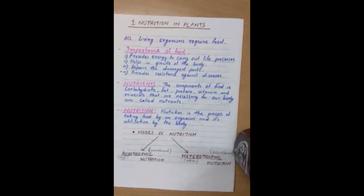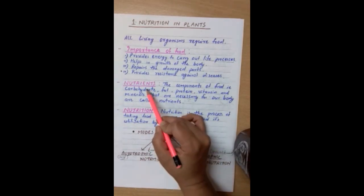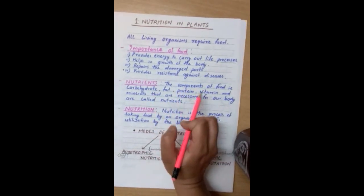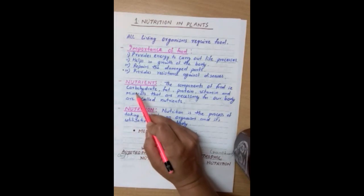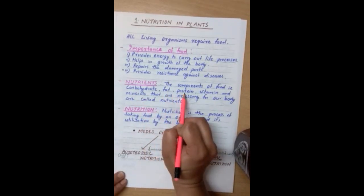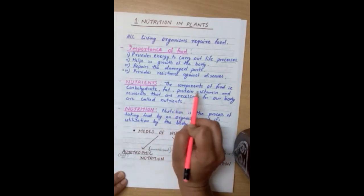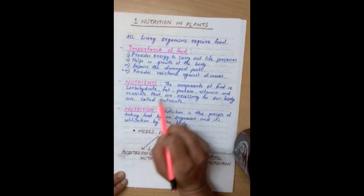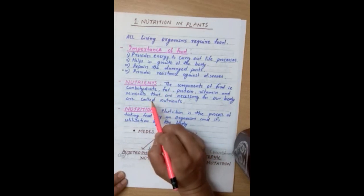Also in class 6, we have read that there are components of food. What are those components? Those components are carbohydrate, fat, protein, vitamin and minerals. Carbohydrate and fat are energy giving food. Protein is a body building food. Vitamins and minerals provide us resistance against diseases or they boost up our immunity.